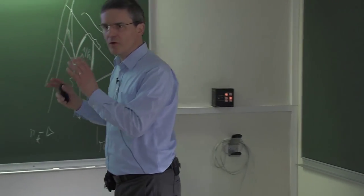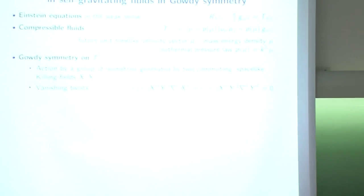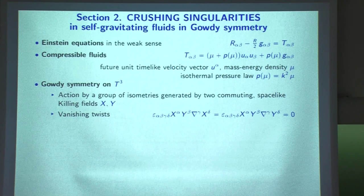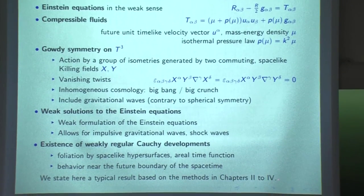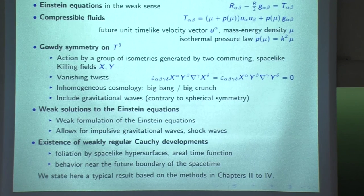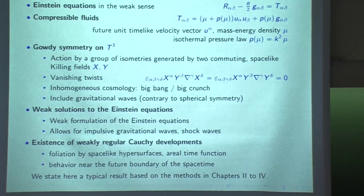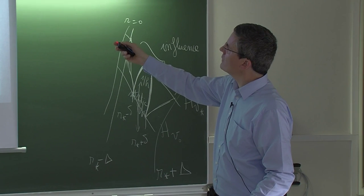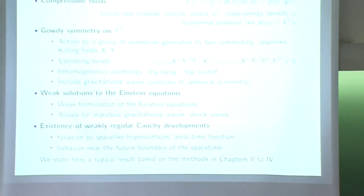I will not say more about this result here, but I can now tell you about the second result also for matter spacetimes. We are now going to work in Gowdy symmetry. We have seen Gowdy spacetimes and T2 symmetric spacetimes before. I follow the method in chapters 2 to 4 that we have introduced before. What's new here is that the matter is taken into account, and like in chapters 2 and 3 we are working with T2 symmetry, specifically assuming Gowdy symmetry here.